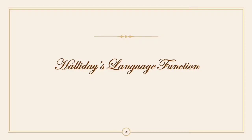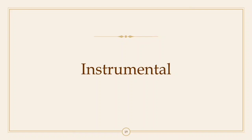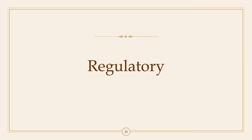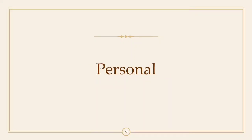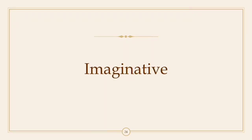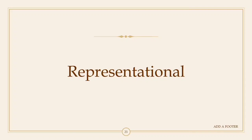Halliday's Language Functions: Instrumental — language is used to express people's needs or to get things done. Regulatory — language is used to tell others what to do. Interactional — language is used to make contact with others and form relationships. Personal — language is used to express feelings, opinions, and individual identity. Heuristic — language is used to gain knowledge about the environment. Imaginative — language is used to tell stories and jokes and to create an imaginary environment. Representational — language is used to convey facts and information.